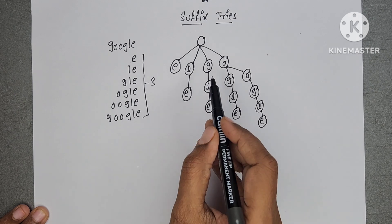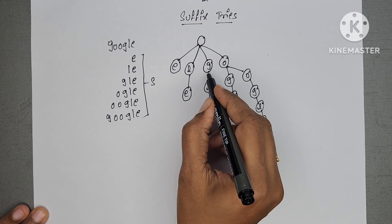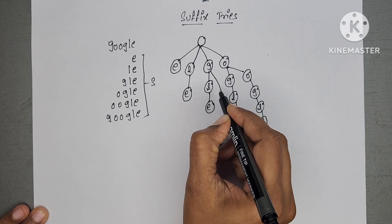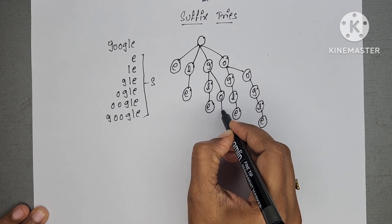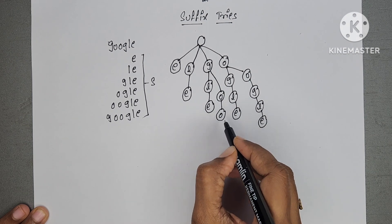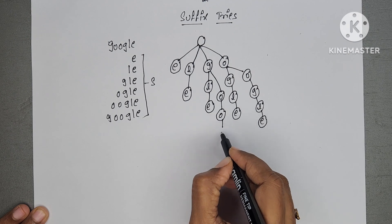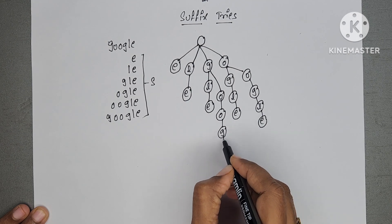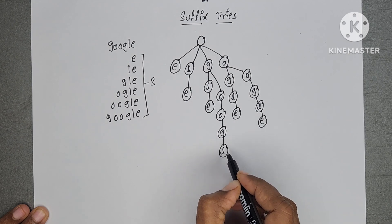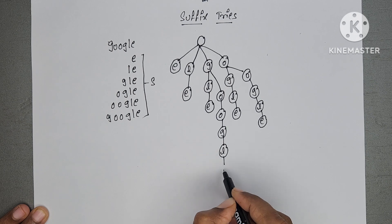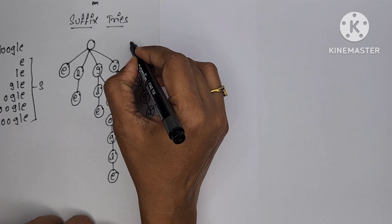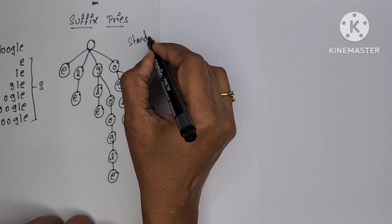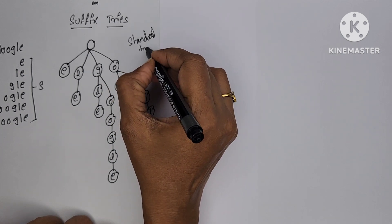The same node we can use — no need to create another node for G. For remaining characters, we have to create nodes. So this is a standard trie. We have already discussed the problem with standard trie: if the number of levels is more, the searching process is difficult and takes more time. So this is the standard trie.